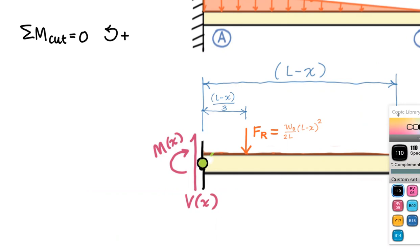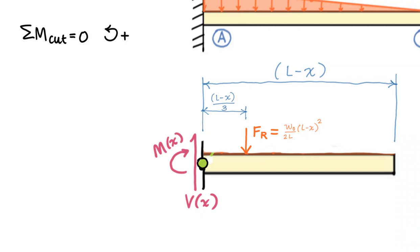So that axis coming out of the page at you right now is what we are summing about. We're not summing about x. We're not summing about y. We're summing about z. How many terms are we going to have in this moment summation? Just two. One, two. First term, M(x).